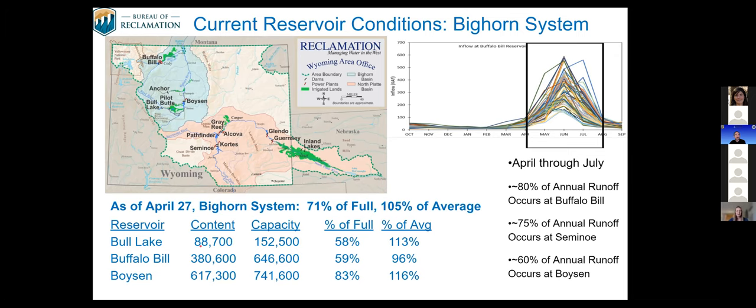The Bighorn reservoirs are at 71% full. Lake and Boyson contents are above average for this time of year. Both reservoirs are expected to fill under our expected forecast. Buffalo Bill is only 59% full. As of our current forecast, we do not expect it to fill. While the percent-of-average numbers are looking good, the below-normal snowpack has our forecasted numbers looking below average. We do expect to have adequate supply for our irrigation water and our irrigation district partners.